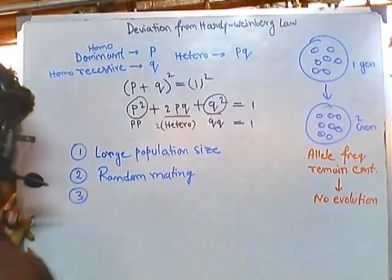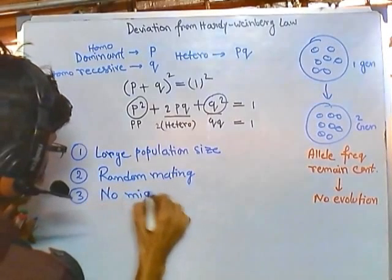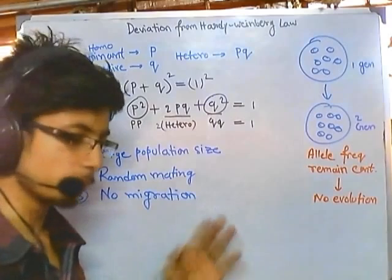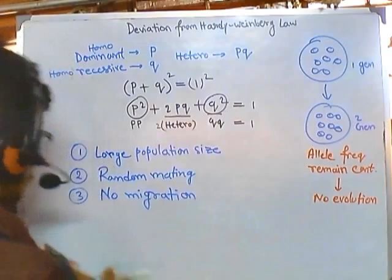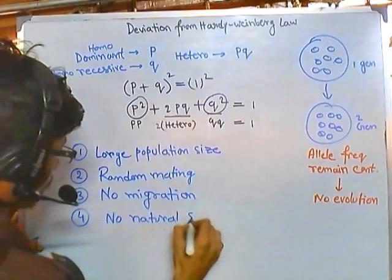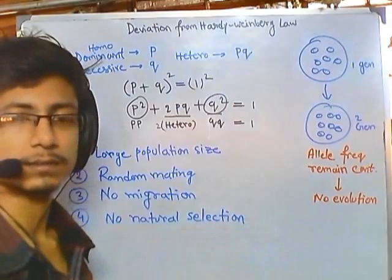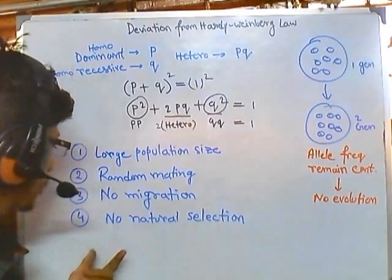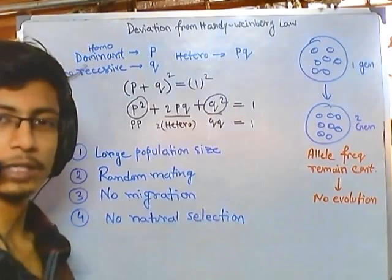The third condition is no migration — no immigration or emigration. But this never occurs in practice because members of a population are always coming and going. The fourth condition is no natural selection. But this never occurs because nature always intervenes, and so the Hardy-Weinberg equilibrium destabilizes.